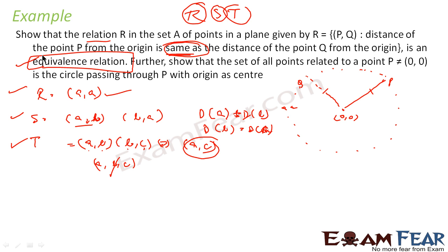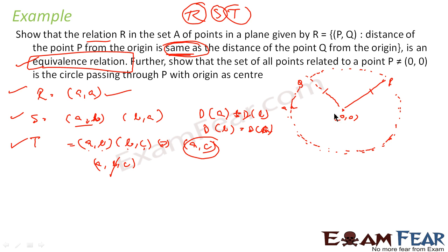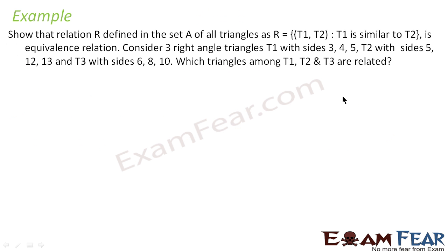Now if you observe, if you take all the points P where P is not equal to zero and join all these points, you will get a circle with center as the origin. The circle by definition is the locus — a set of all points that are equidistant from one fixed point, which in this case is the center. Let us take one more example.